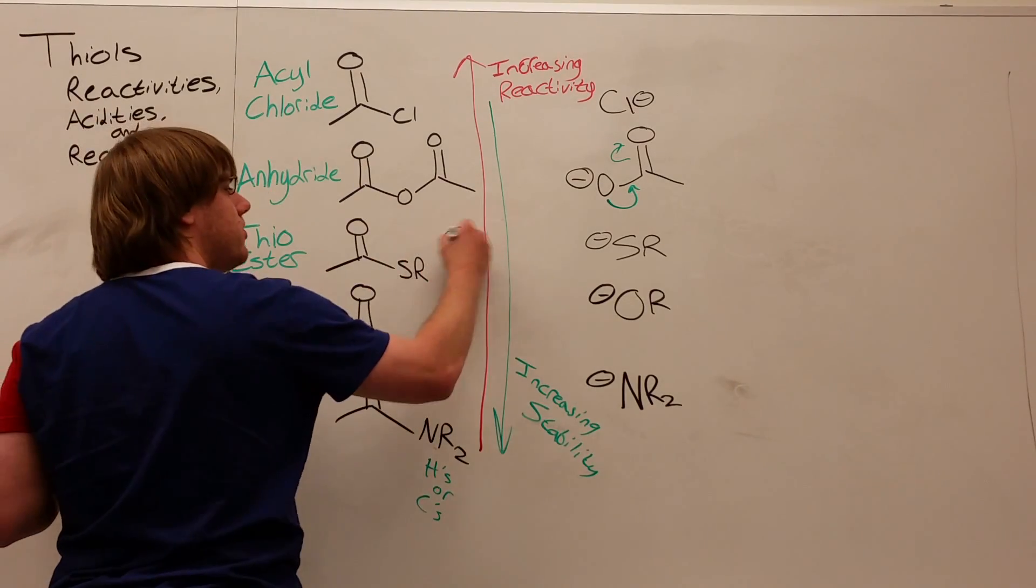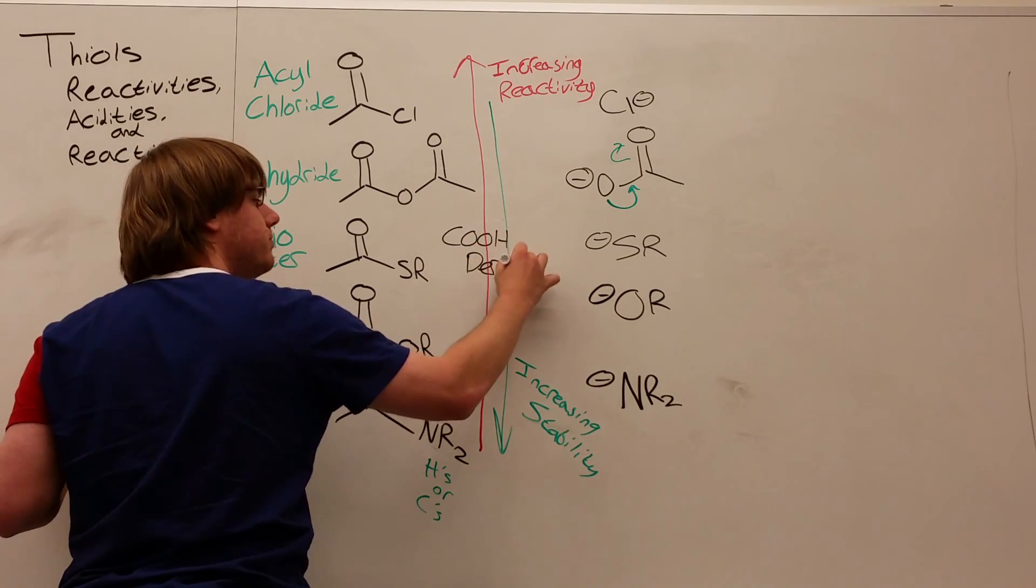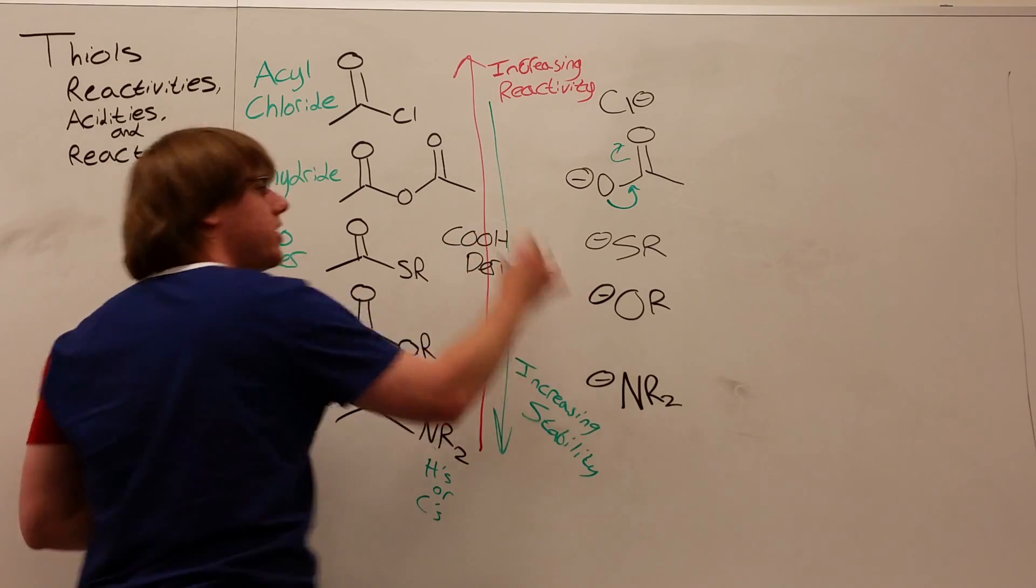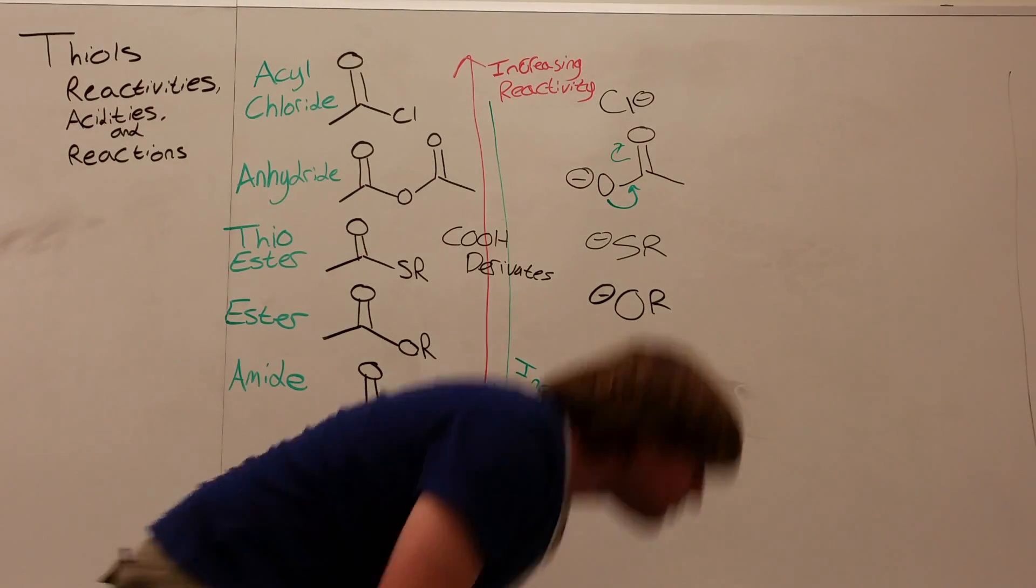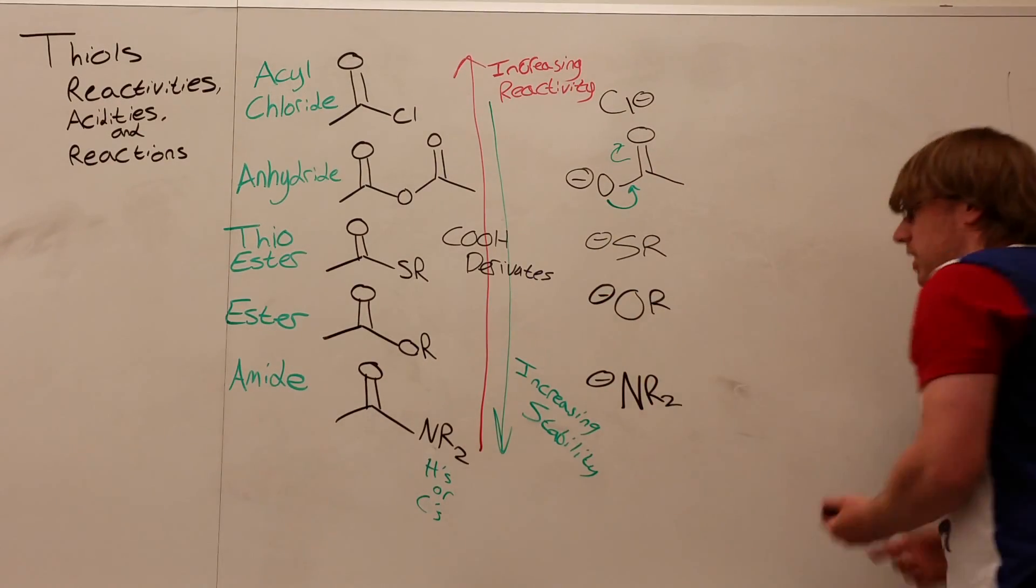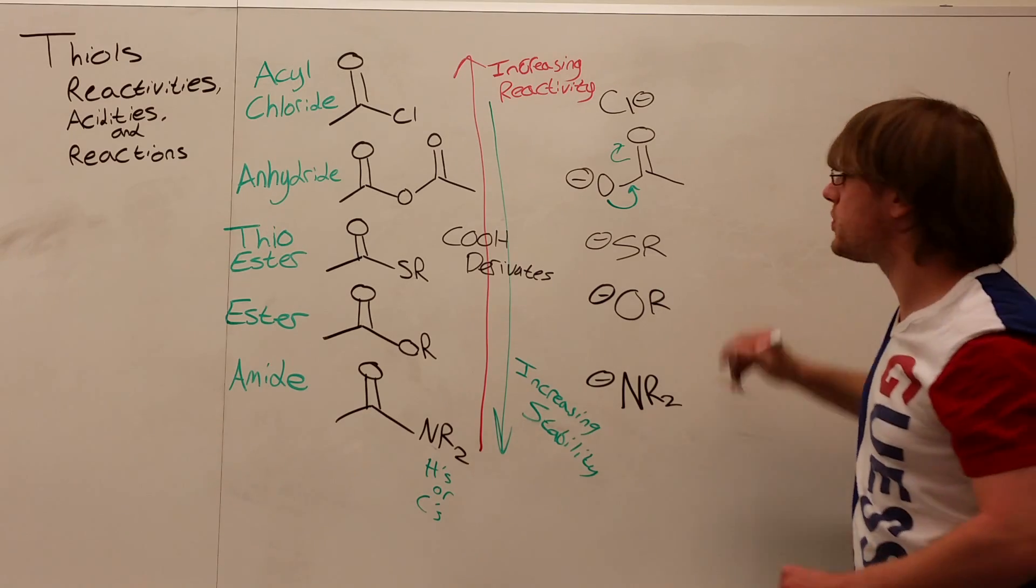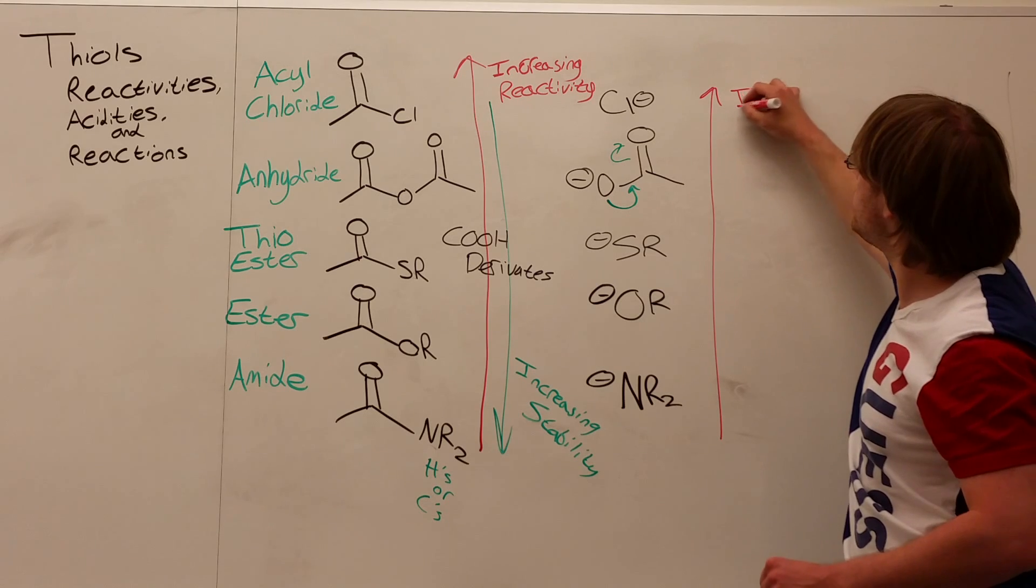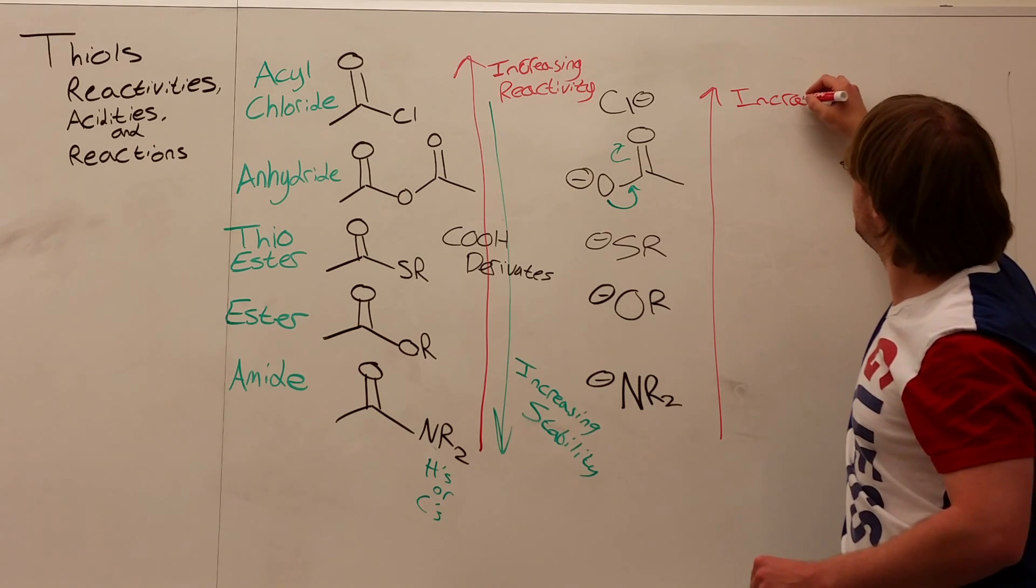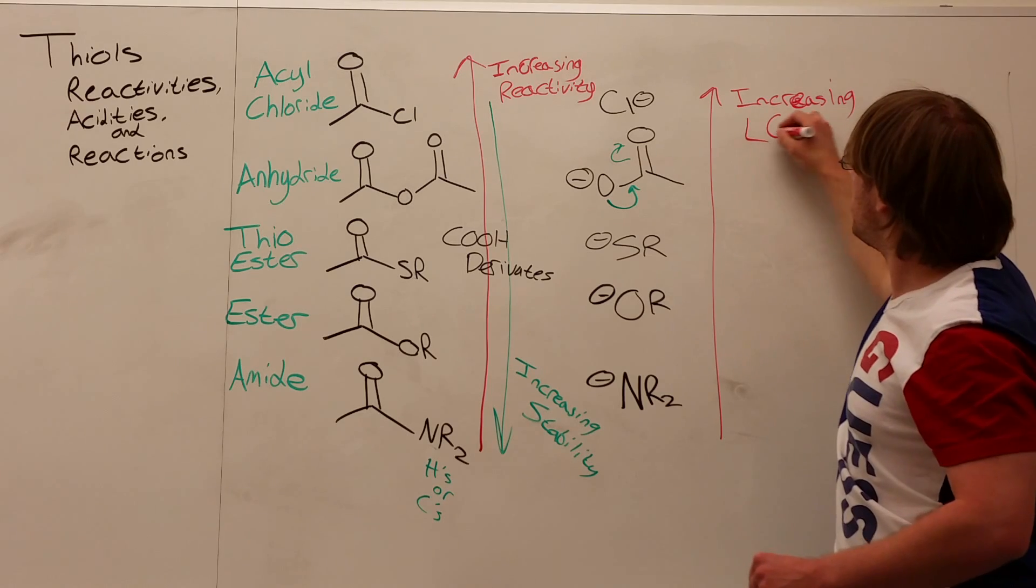But now let's look at the leaving groups and see how they compare. So, as we've said before, in the case of the carboxylic acid derivatives leaving groups, as we move up, we're going to be more stable. Increasing leaving group stability.